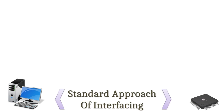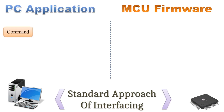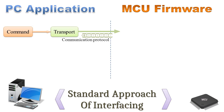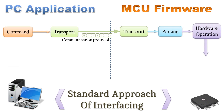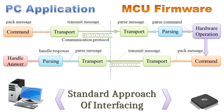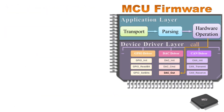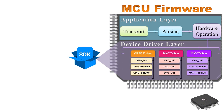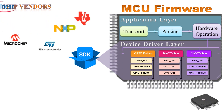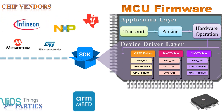To do an operation with hardware, a desktop program sends a message to the chip using a specific communication protocol. The firmware in the chip receives the message, parses it, parses the command, performs an action on peripherals and returns a response. Usually, this action is a function call of a peripheral driver from the software development kit, called SDK, provided by semiconductor chip vendors or third parties.